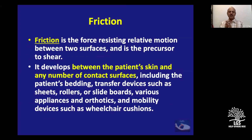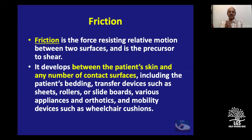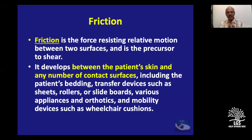Now, the second force: friction. Friction is the force resisting relative motion between two surfaces and is the precursor to shear. It develops between the patient's skin and contact surfaces like bedding, transfer devices, sheets, rollers, appliances, orthotics, and mobility aids. Friction is the force between the patient's skin and the outside surface — whether the bed, stretcher, orthotics, or splint.